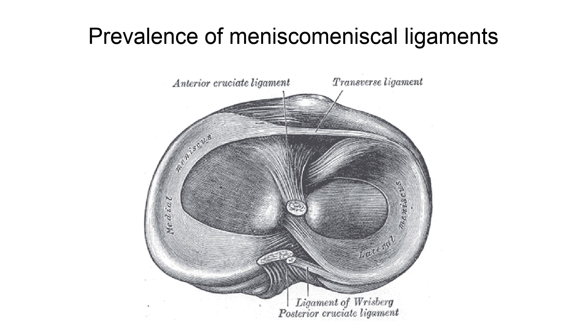Both oblique ligaments originate on the anterior horn of their namesake meniscus, pass between the cruciate ligaments, and attach to the posterior horn of the opposite meniscus. None of the oblique ligaments have a known function.